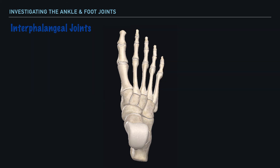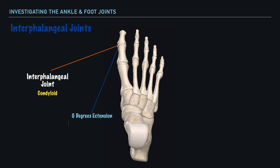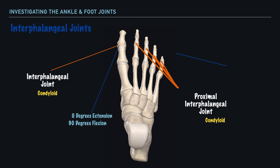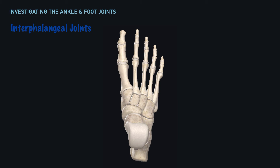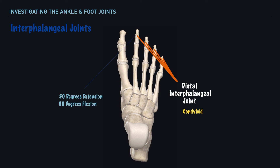Next, let's talk about the interphalangeal joint of the great toe, which is also a condyloid joint. It can typically maintain 0 degrees of extension and achieve up to 90 degrees of flexion. For the four lesser toes, the proximal interphalangeal joints, which are also condyloid joints, can typically maintain 0 degrees of extension and achieve up to 35 degrees of flexion. Moving to the distal interphalangeal joint, which is also a condyloid type of joint, it is typical to achieve 30 degrees of extension and 60 degrees of flexion. However, we want to highlight that in this joint and many others, there is a great deal of variability in the amount of motion one can achieve.